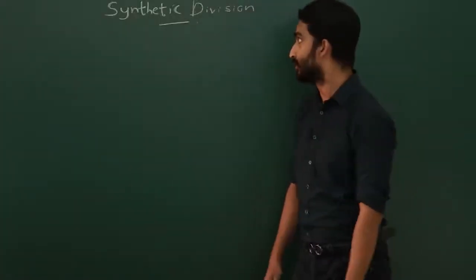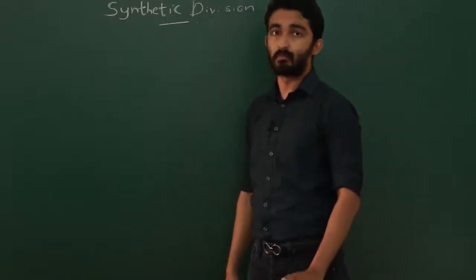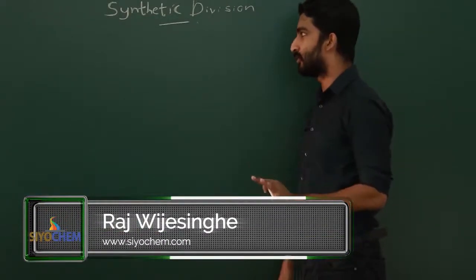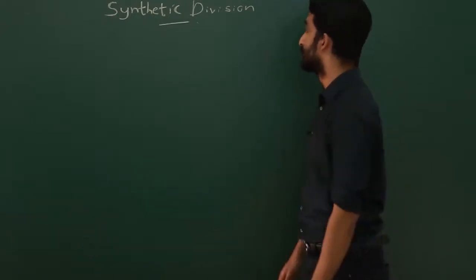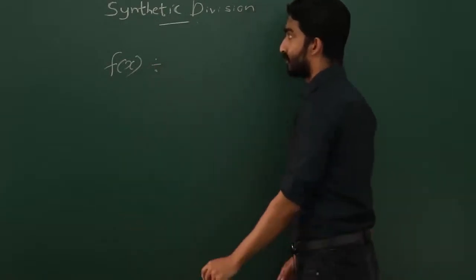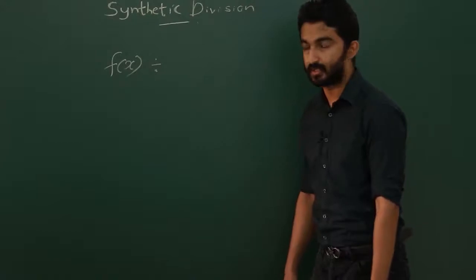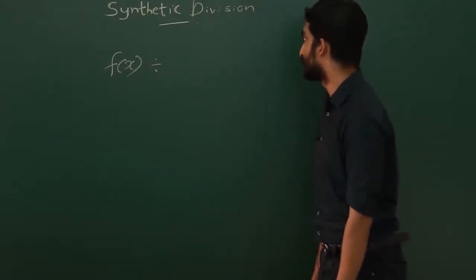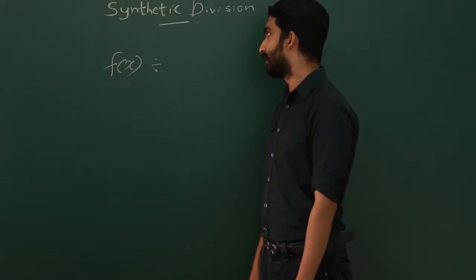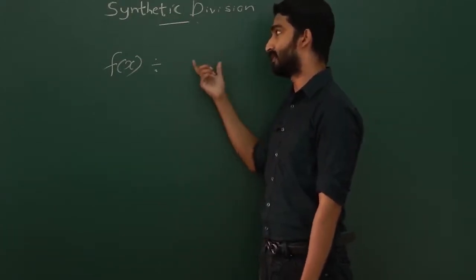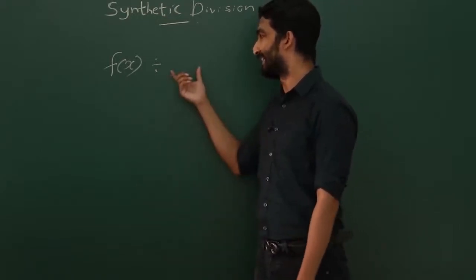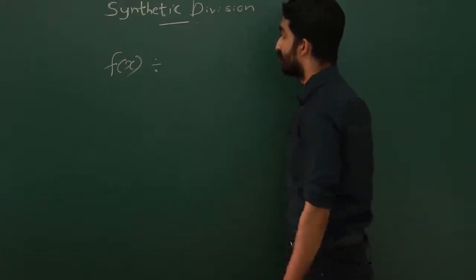Now let's learn a methodology to do the previous questions in a much simpler way — we call it synthetic division. This is a basic concept, and you may not understand it until you do an example, so just hold on your patience. When you divide a function by a linear function — we are doing this for linear functions only — synthetic division can be applied for other degree functions as well, but here in A-levels we use it as a shortcut method to check accuracy.